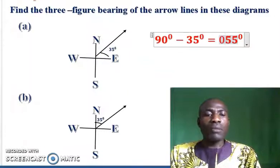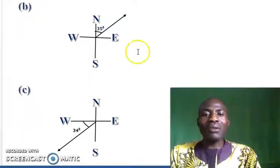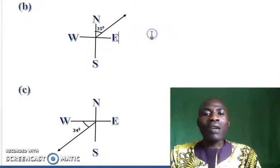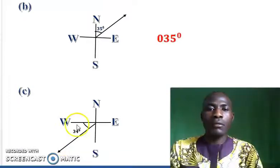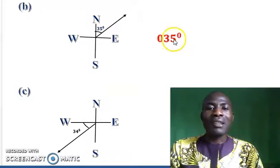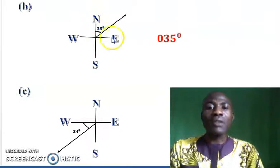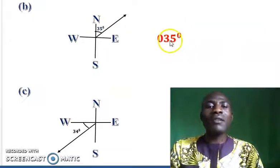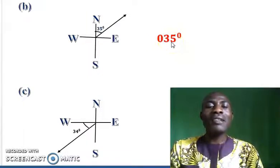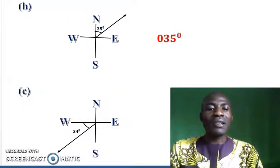The solution for B is quite simple. All you need to do is add a leading zero to 35, and it becomes a three-figure bearing: 035 degrees. That is the three-figure bearing for this compass bearing of 35 degrees north of east. The reason we call it a three-figure bearing is because it has three digits: one, two, three.